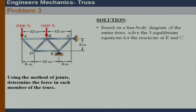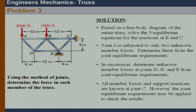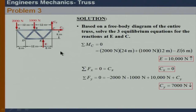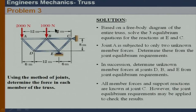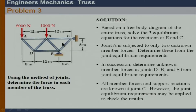Another method of joints problem. We can solve for the reactions first since this is a simple truss supported by three reactions. With reactions at C (CX, CY) and roller reaction EY, we can use the entire truss as a rigid body and take moment about C, sum of forces along X, and sum of forces along Y — three conditions giving three unknown reactions.